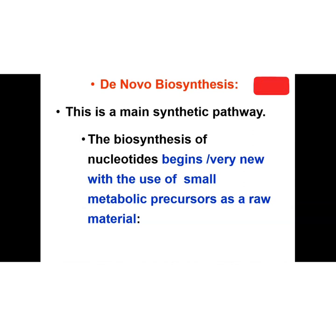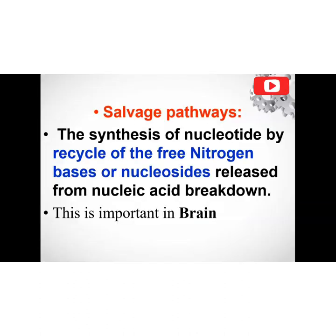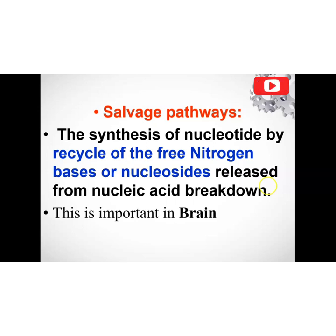The de novo biosynthetic pathway begins fresh, using small metabolic precursors as raw materials — amino acids, ribose-5-phosphate, and one-carbon moieties like N10-formyl-THF. The salvage pathway involves synthesis of nucleotides by recycling free nitrogenous bases or nucleosides released from nucleic acid breakdown. This is especially important to the brain, as studies have shown that brain cells do not divide, so they rely on the salvage pathway to recruit nucleosides that have resulted from breakdown.